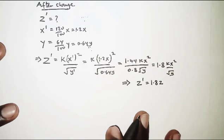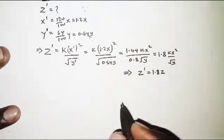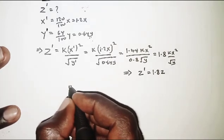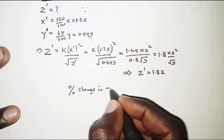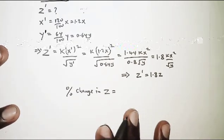So finally we are going to look at the percentage change. Percentage change in z will be obtained by the change in z, which is the new value minus the original, all over the original, and then we multiply by 100.